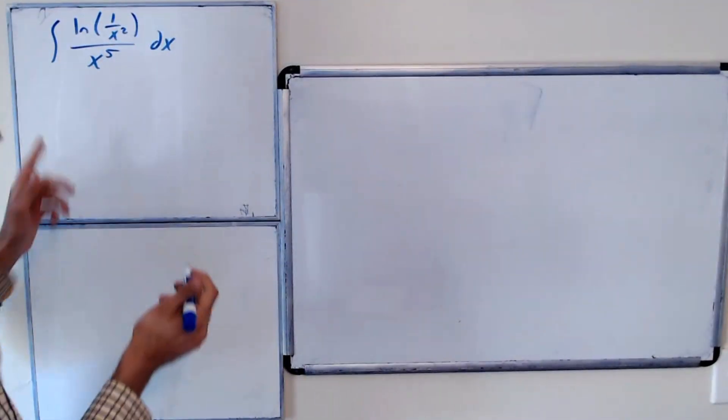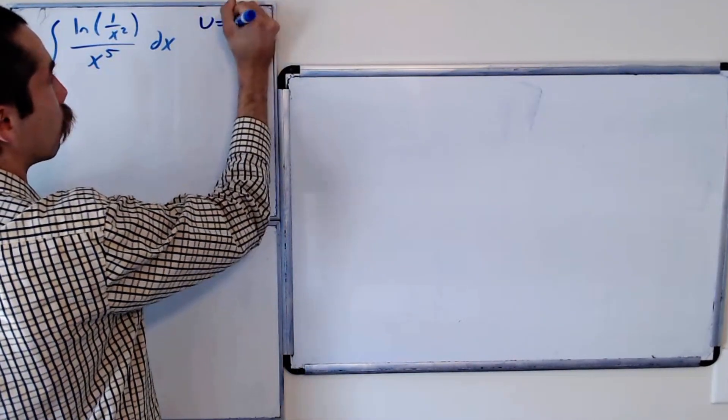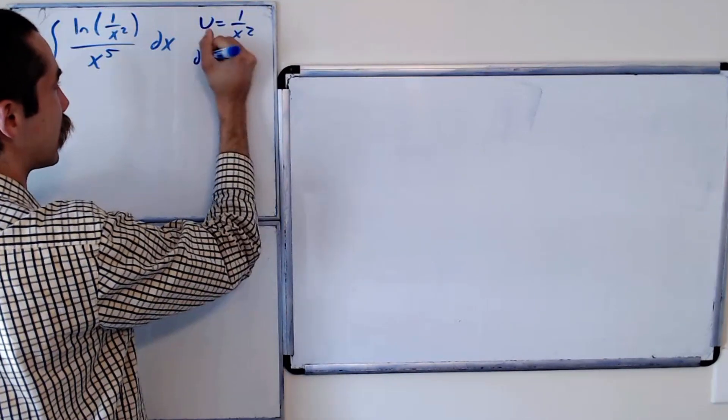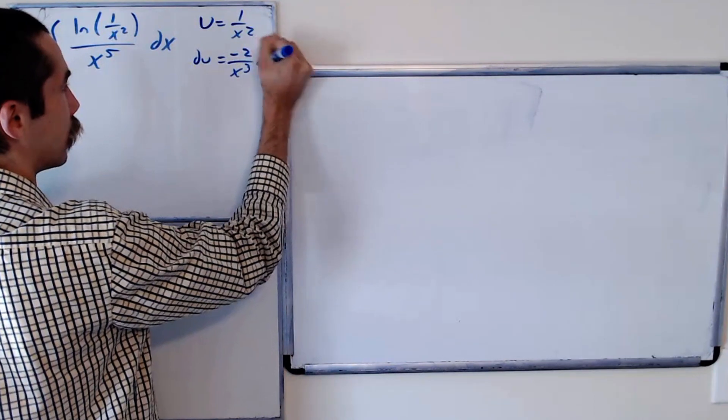The first thing we should know is we could just do a u substitution. So let's let u equal 1 over x squared, and du will equal negative 2 over x to the 3rd dx.